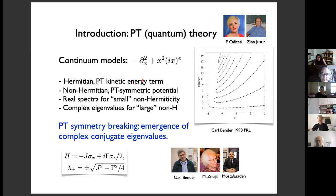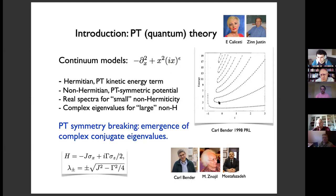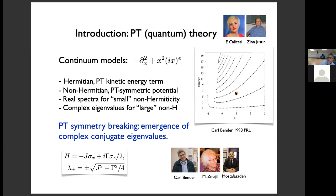The basic idea is that you have continuum models — a non-relativistic Schrödinger equation for a single particle — with a Hamiltonian given by a kinetic term, the usual momentum squared term, and a potential term. For not sure what good reasons, one decided to investigate complex potentials. So you have a non-Hermitian PT symmetric Hamiltonian with a potential term x squared times ix to the power epsilon. When epsilon equals zero, this gives the well-known simple harmonic oscillator; when epsilon equals one, this gives a purely imaginary potential called ix cubed.